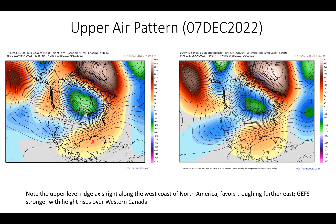Moving ahead, the upper air pattern for December 7th: we've moved forward two days, and now we're seeing this upper-level ridge positioned over south Florida into the southeastern Gulf of Mexico. The ridging is now expanding more over the western Atlantic. The upper-level low is situated over the western portions of Hudson Bay, becoming firmly established. I really like the position of this shortwave ridge axis right along the west coast of North America — this is a favorable ridge axis position for troughing further to the east, downstream into the central and eastern U.S. This ridge is providing resistance, but for how long will it hold up?